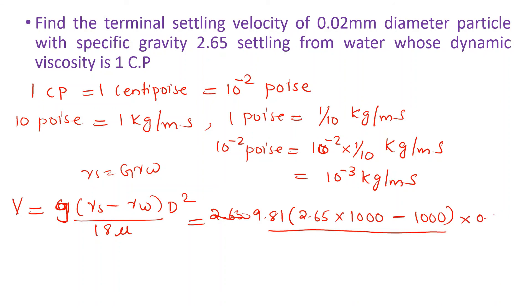Substituting: D is 10⁻³ m (0.02 mm converted), the whole squared, divided by 18 into 10⁻³ kg/m·s for the dynamic viscosity.